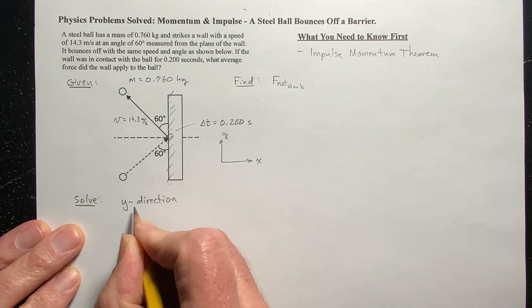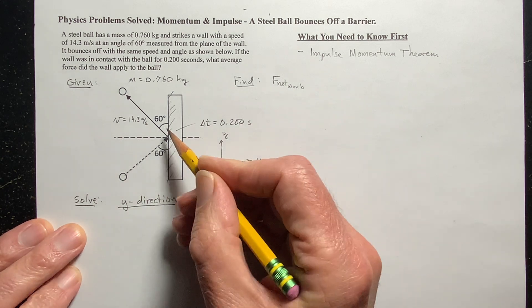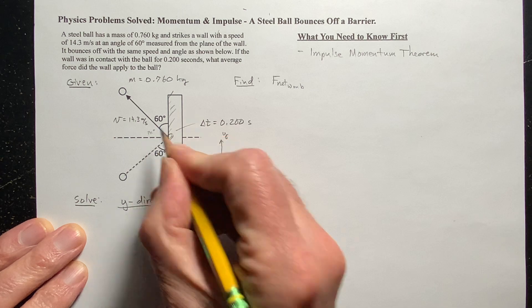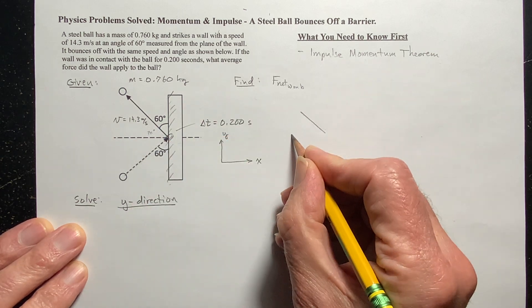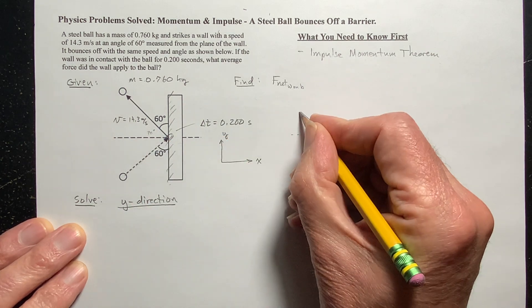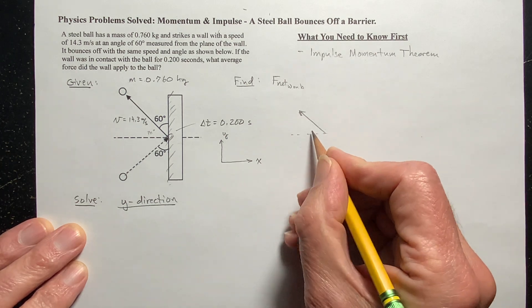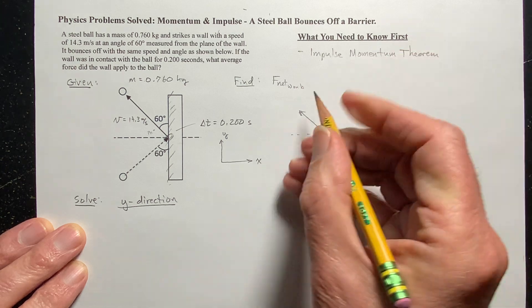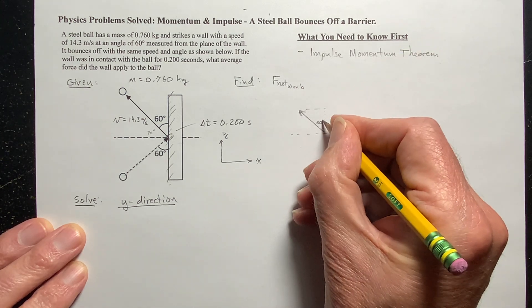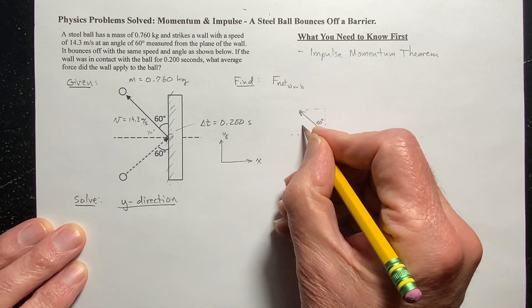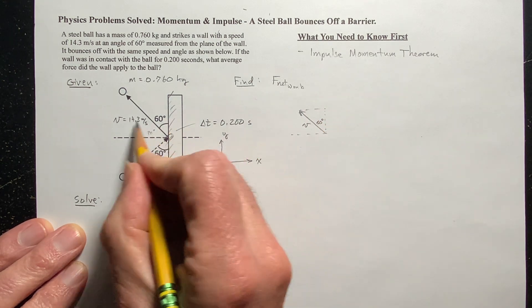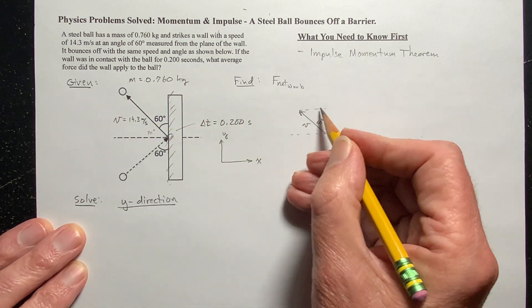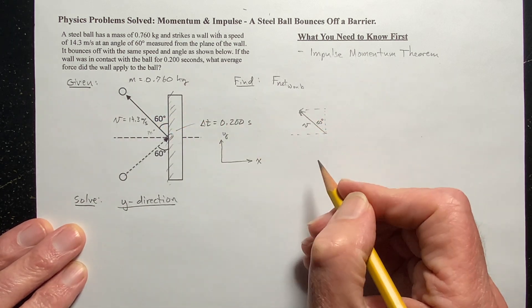Now, once you kind of get a hang of this, you won't really need to do this because this will be kind of obvious. But if you're just learning this for the first time, I'm kind of overdoing things here, I'm going to look in the y direction. Let's look in the y direction. Okay, and let's look at this. So, so here's the, so this would be 30 degrees, right? So let's look at it as it leaves the barrier. So this is the velocity and this is, so this is 60 degrees.